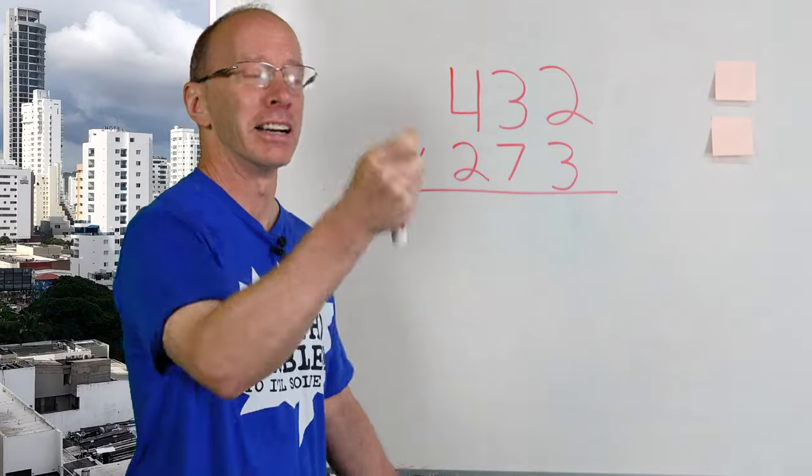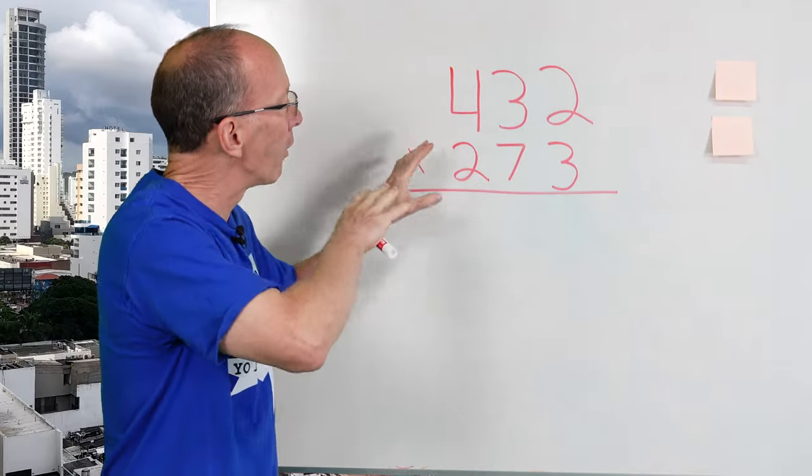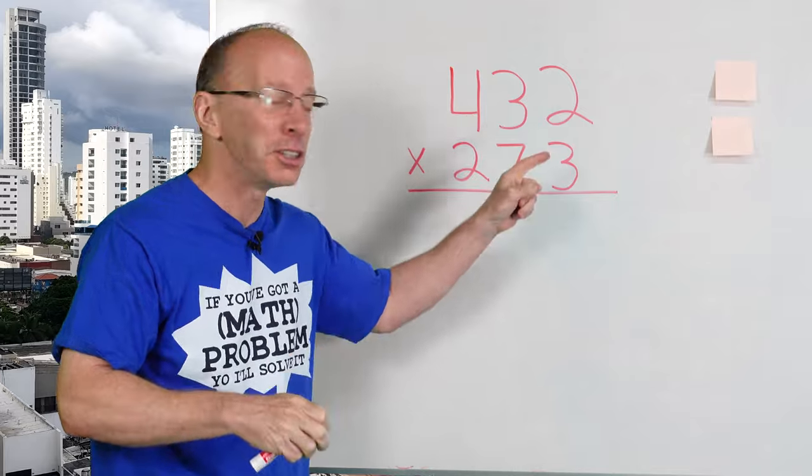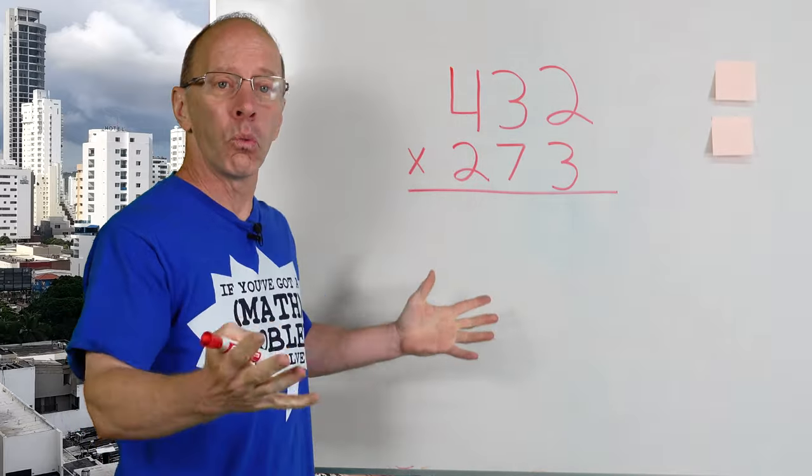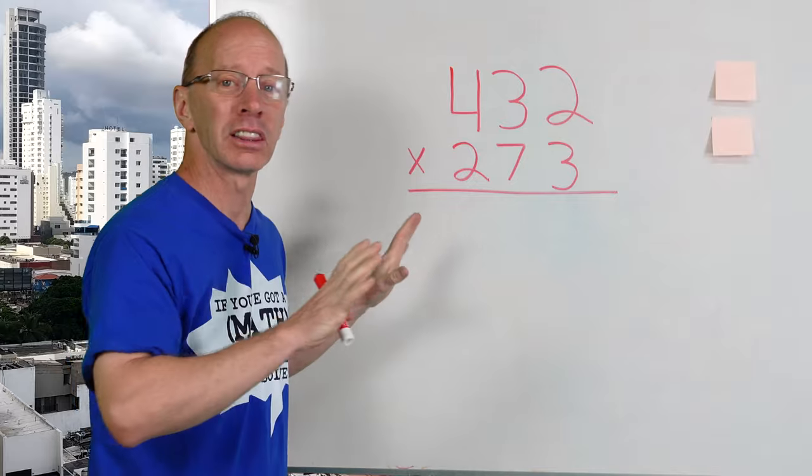Alright, let's get started here. Today I have 432 times 273. Where do I begin? This looks a little complicated.